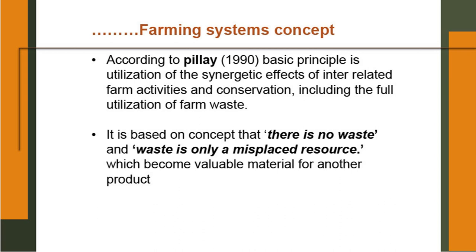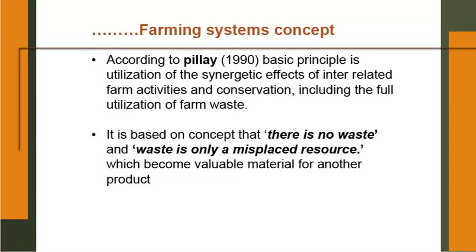According to Pillai 1990, the basic principle is utilization of the synergistic effect of interrelated farm activities and conservation, including the full utilization of farm waste. Synergistic means: if factor A has a weight of 10 and factor B has a weight of 20, their total separately is 30. But when you bring A and B together and it gives you 40 — which is more than their total separately — that is interaction. When two enterprises come together, they benefit each other and overall the output is more than the sum of their individual contributions. It is based on the concept that there is no waste — waste is only a misplaced resource, which becomes valuable material for another product.